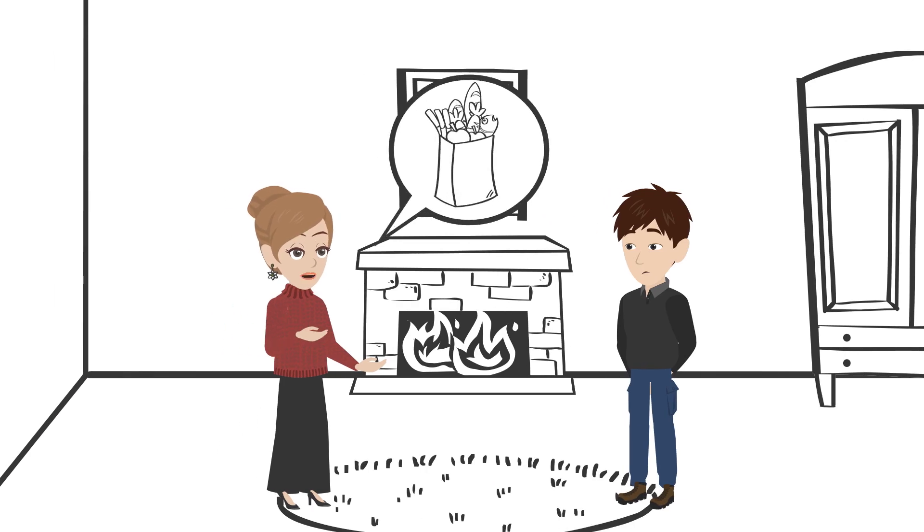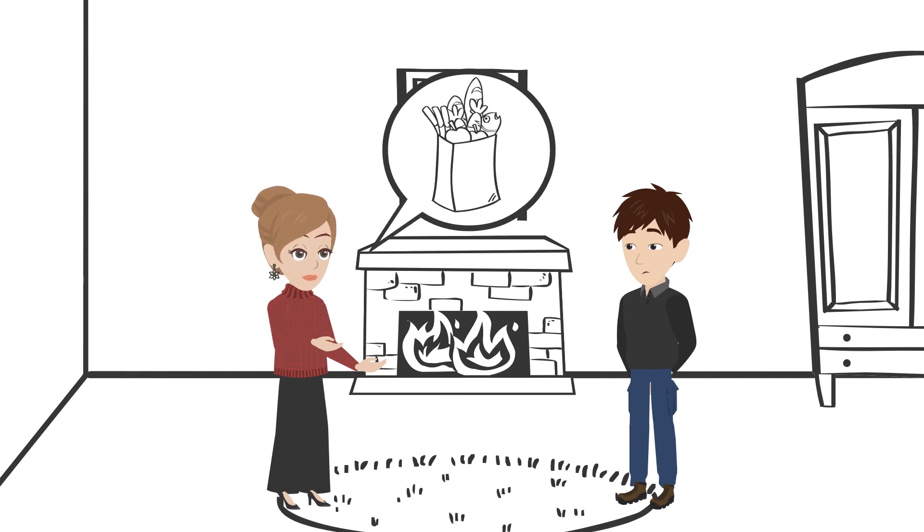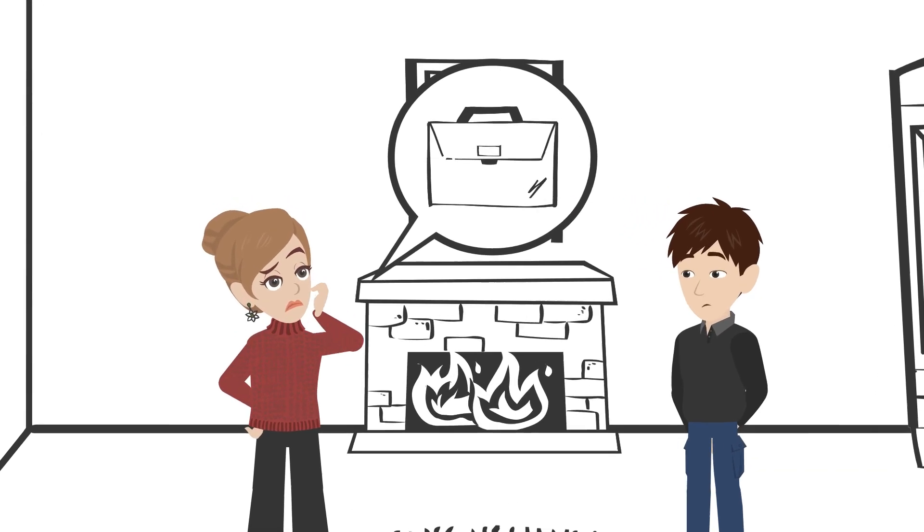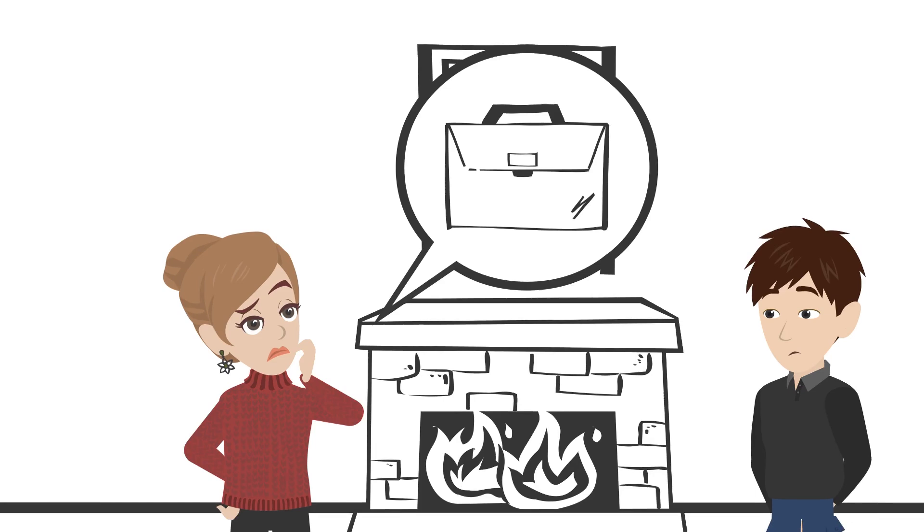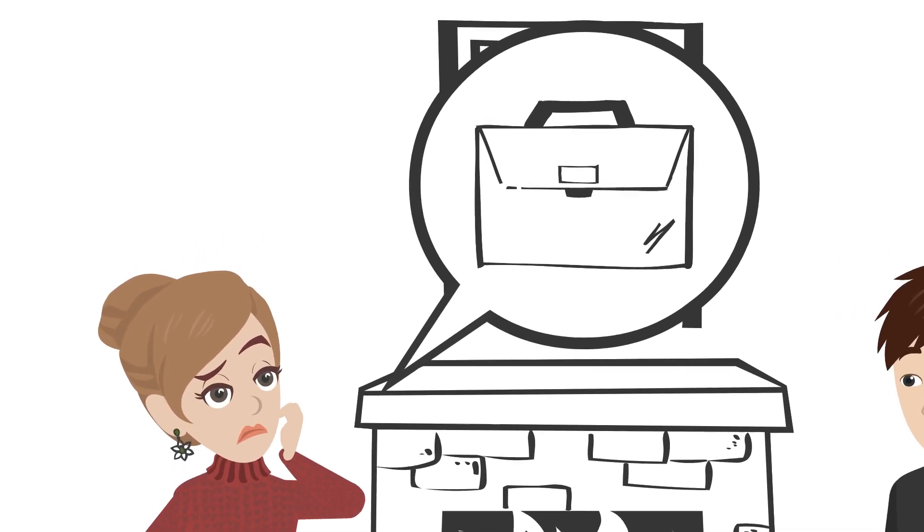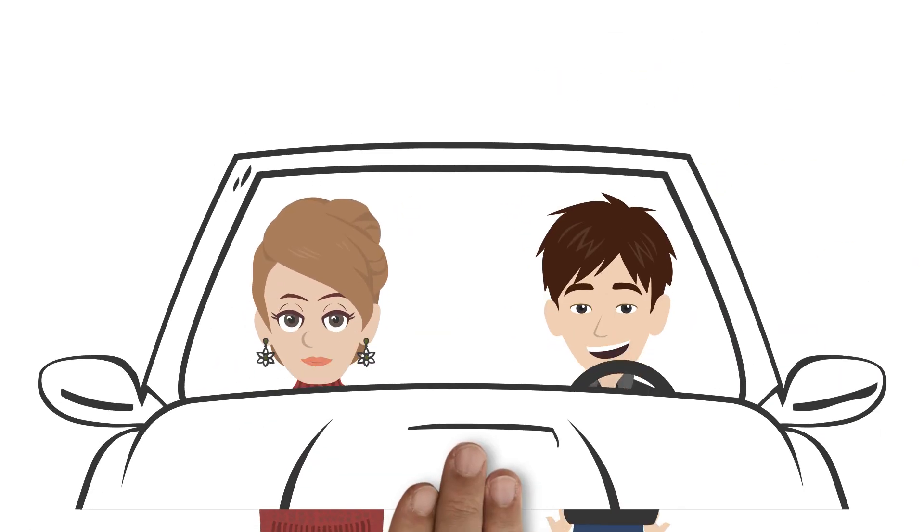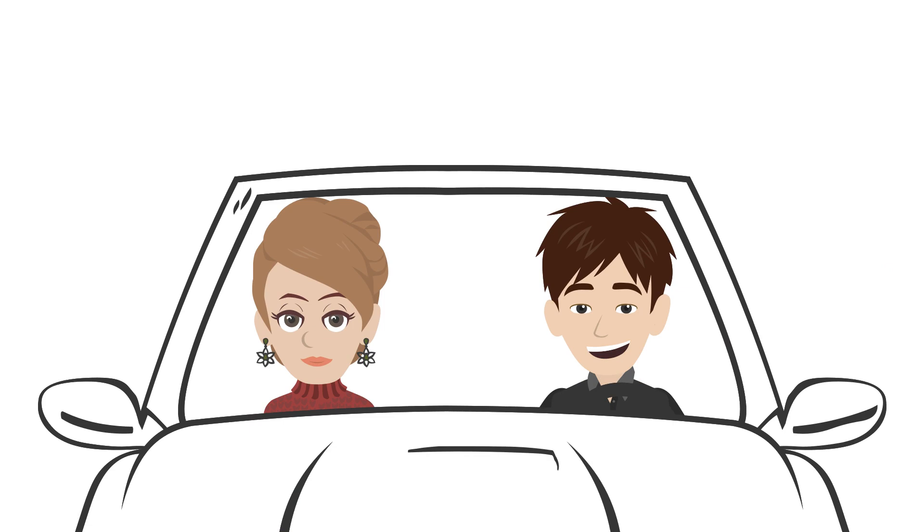For example, let's say your partner forgets to do the groceries on the way home from work, even though you asked them to. Instead of getting angry and starting a fight, try to understand that maybe they had a long day or were preoccupied with something else. Instead of blaming them, forgive them and work together to come up with a solution, like ordering takeout or going to the store together later.